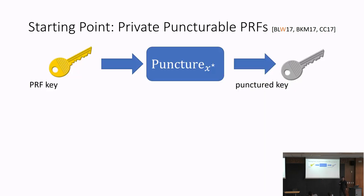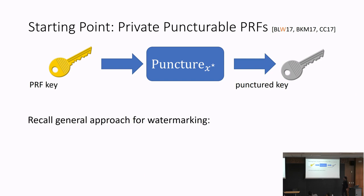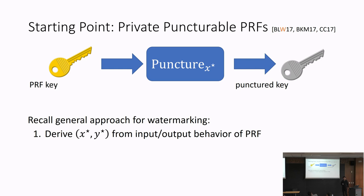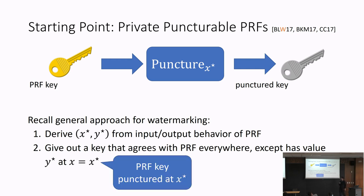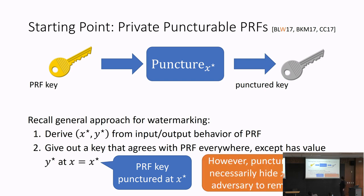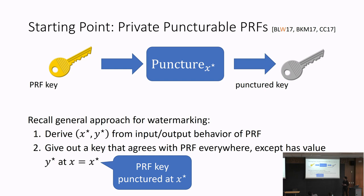What is the relation between puncturable PRFs and watermarking? Recall our general approach: we derive the special point x* and y* from the input-output behavior of the PRF, then give out a key that agrees with the original PRF everywhere except at x*, where it has value y*. This is precisely what a punctured key at x* implements — it agrees with the PRF everywhere except the single point x*.